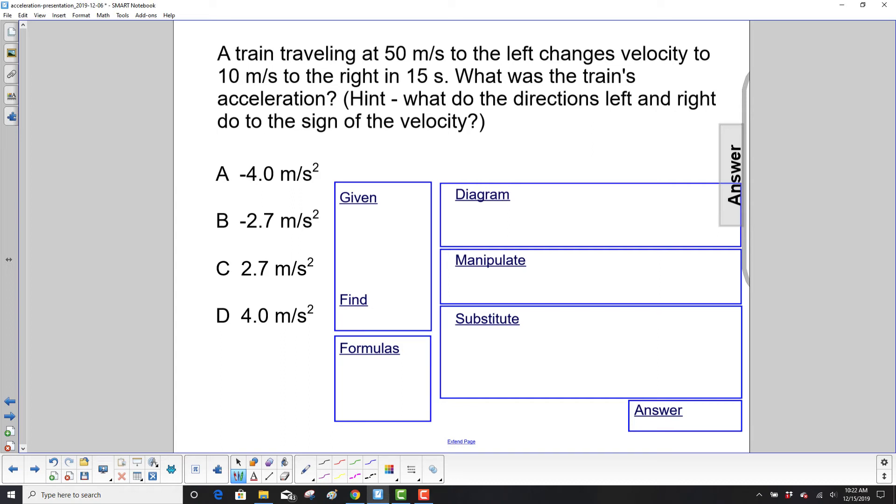A train traveling at 50 meters per second to the left. So right away we have to be careful here. The initial velocity is to the left. That's a negative. Negative 50 meters per second.